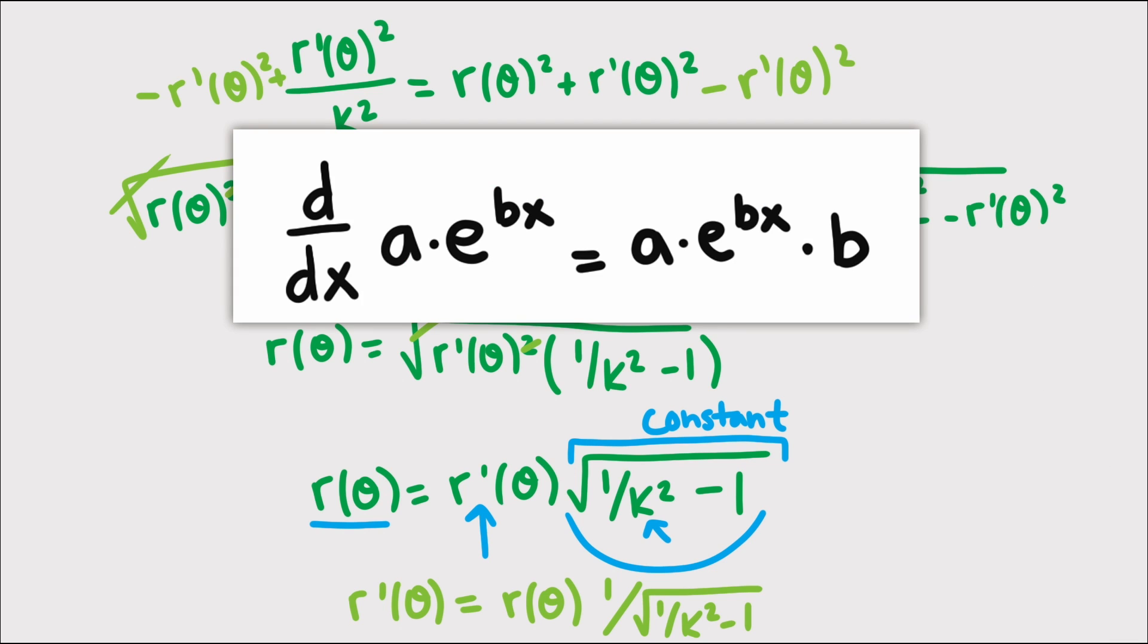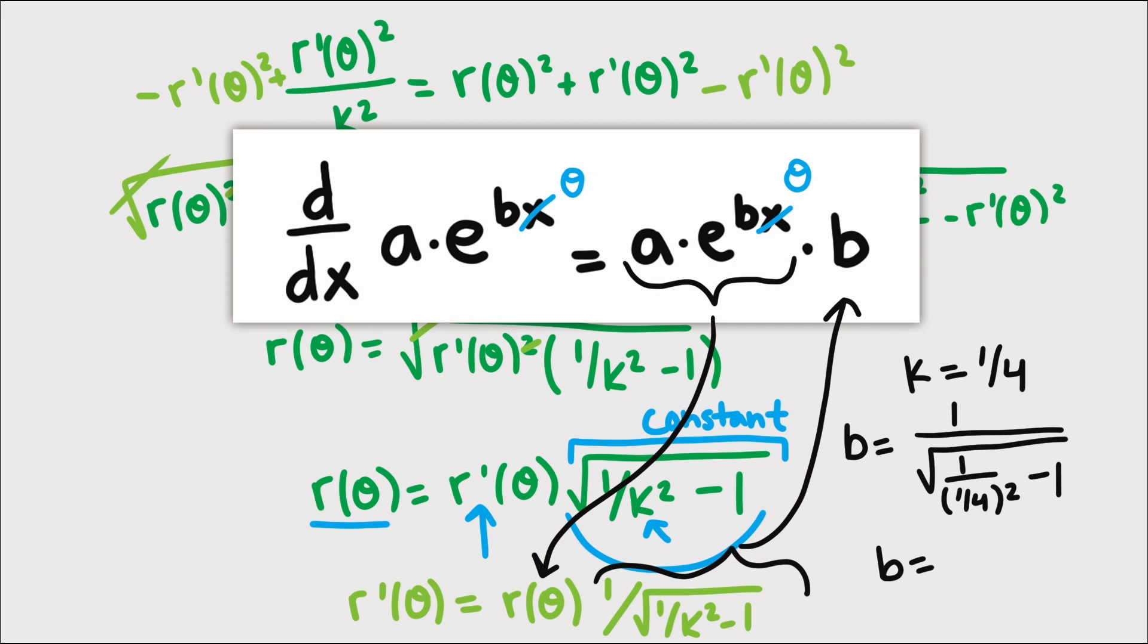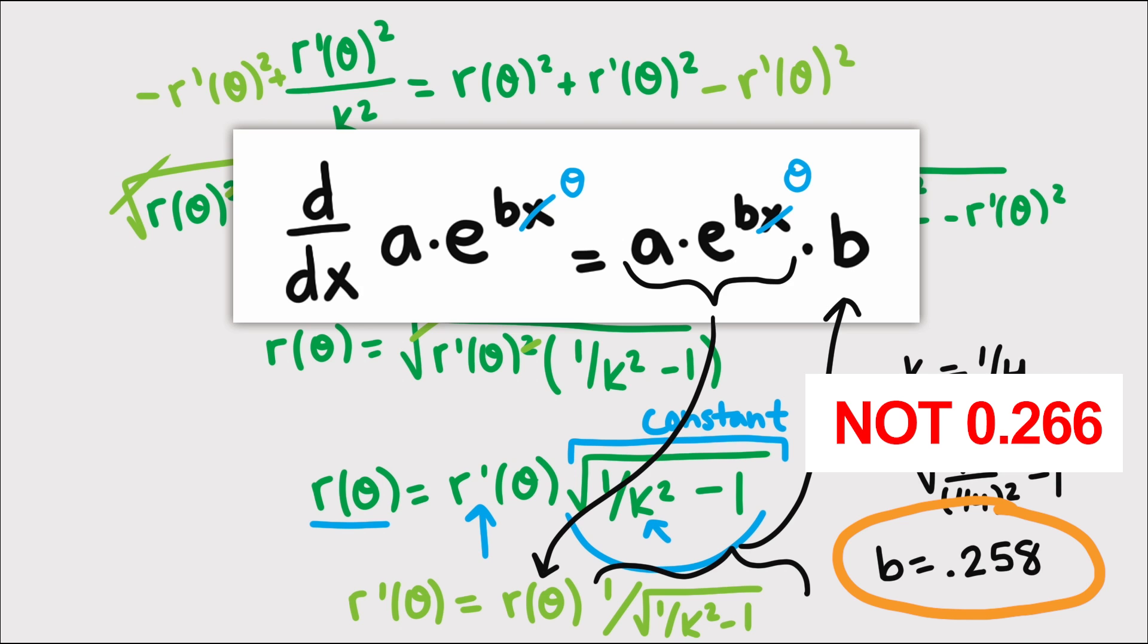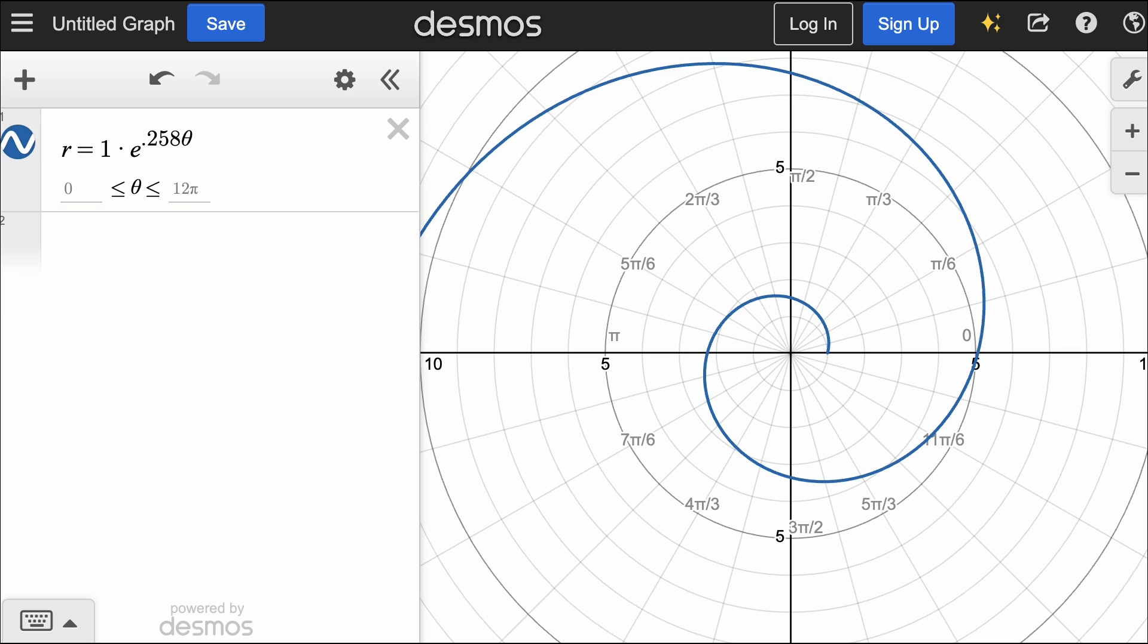They are exponential functions. Anything of the form a equals e to the bx has this property, but since we're dealing with thetas, we should probably write it as a times e to the b theta. If we pick k as 1 fourth, then b, which is the exponent, would be about 0.266. If we set a equal to 1, then graph the polar curve, we do see that it is a spiral that could be close to the disk spiral.